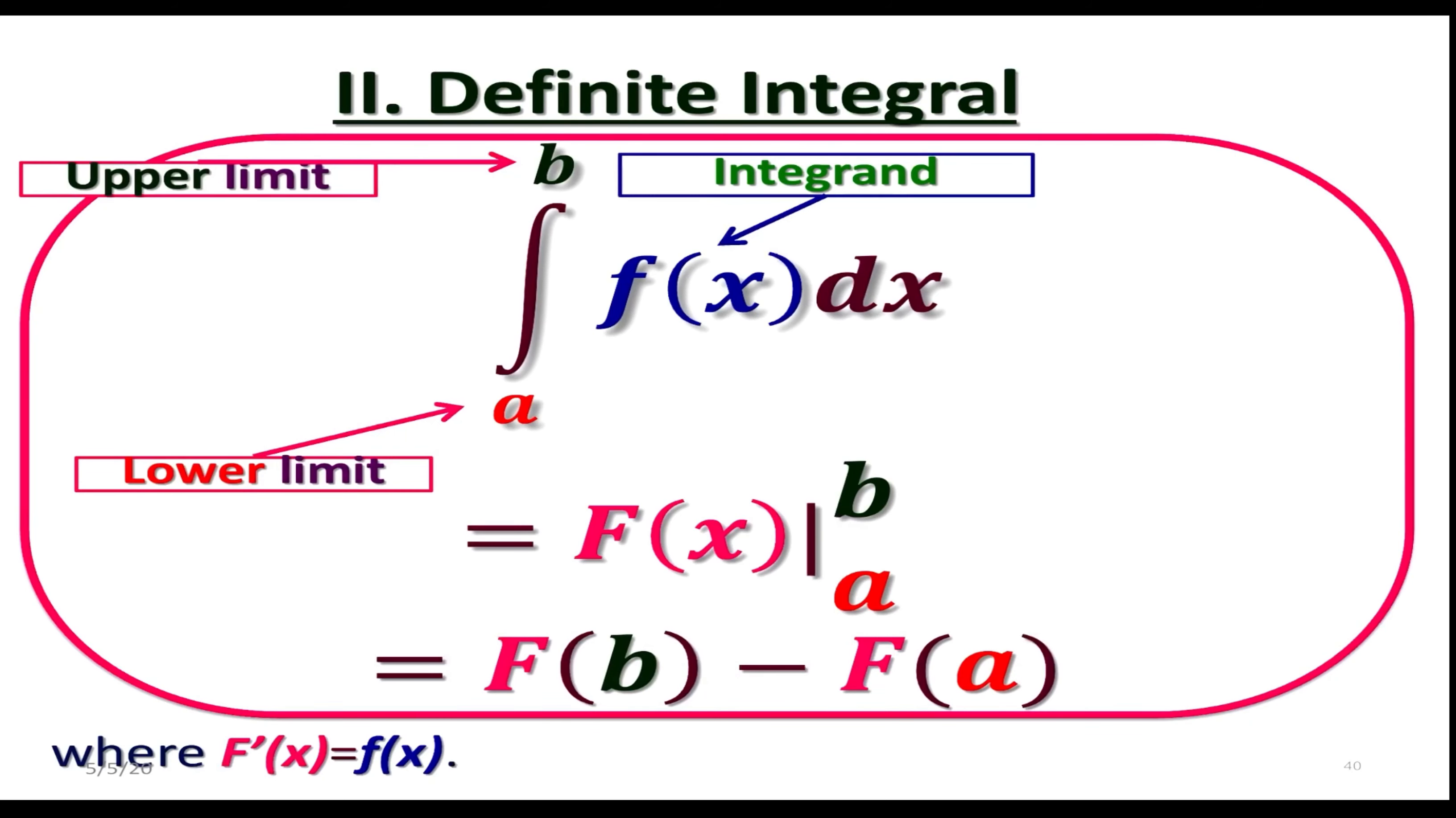This expression inside your integral symbol is called the integrand. These two numbers, a and b, are called lower limit and upper limit, respectively. dx simply means that we integrate with respect to x, not to the other variable, and we call it a dummy variable.